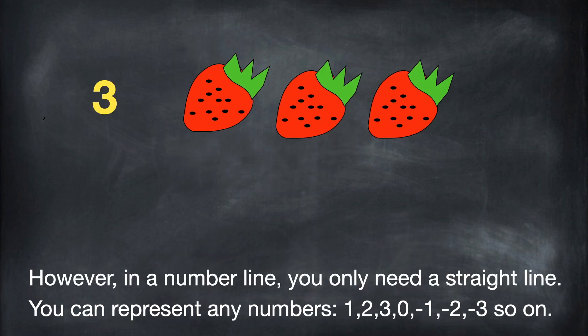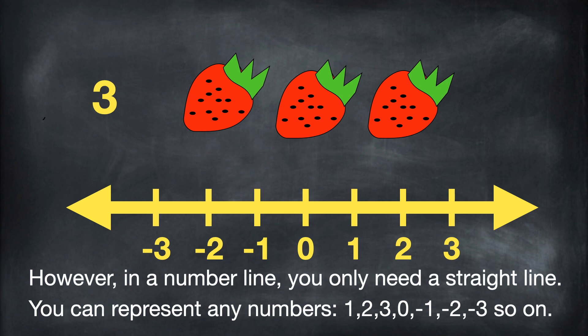However, in a number line, you only need a straight line. You can represent any numbers 1, 2, 3, 0, minus 1, minus 2, minus 3, and so on.